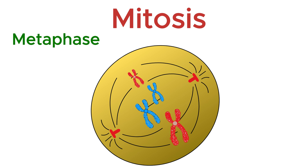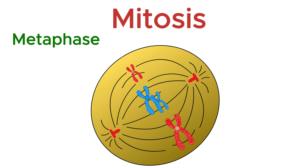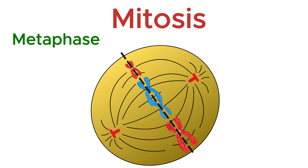Now the cell enters the second stage of mitosis: metaphase. This is the stage where everything lines up with precision. The chromosomes, which were formed during prophase, are now completely condensed and clearly visible. They align themselves along the center of the cell, a region called the equatorial plate or metaphase plate.